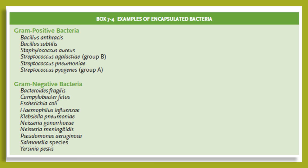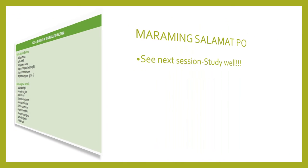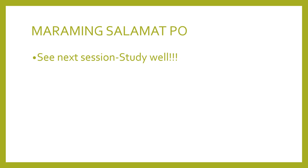In review, gram-positive encapsulated bacteria include Bacillus anthracis, Bacillus subtilis, Staphylococcus aureus, Streptococcus agalactiae, Streptococcus pneumoniae, and Streptococcus pyogenes. Gram-negative encapsulated bacteria include Bacteroides fragilis, Campylobacter fetus, Escherichia coli, Haemophilus influenzae, and Yersinia pestis. That concludes today's lesson.